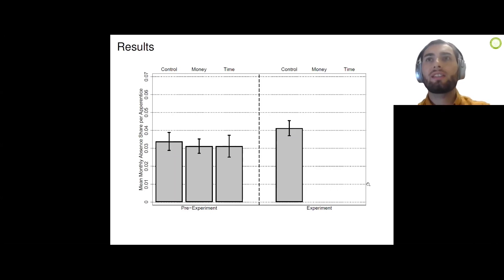Most importantly, we find a stark increase in the absence share among those apprentices receiving the monetary attendance bonus. The difference of the change over time between the control group and the money treatment group is around two percentage points, which corresponds to around one additional day of absence every two months. Among the apprentices receiving the time off bonus, we find roughly the same increase as in the control group, thereby suggesting that the time off attendance bonus was neither harmful nor purposeful.